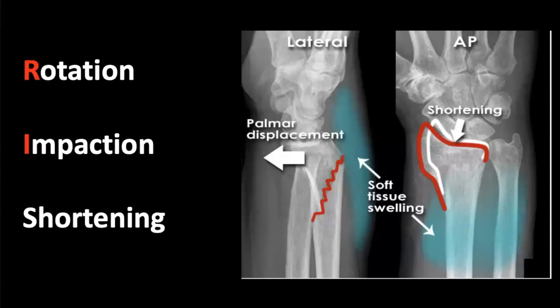Rotation — thinking about how rotated the fracture is, whether it's a spiral, twisted in a funny way. Impaction — thinking about how much shortening and impaction there is, how much has the bone squashed on itself. This becomes particularly important when you think about Salter-Harris fractures in children, because it will potentially change their management and have impact in the future if we miss it.